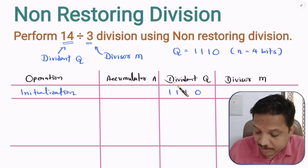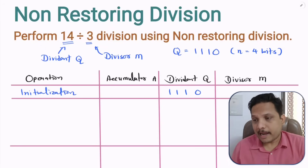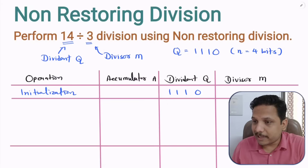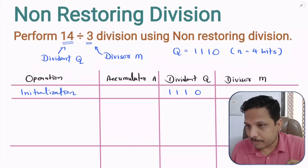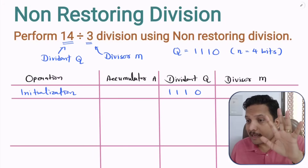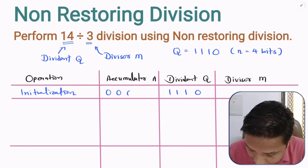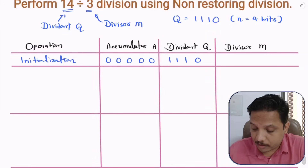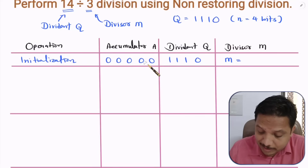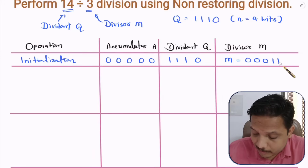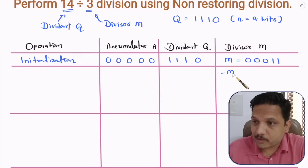When you initialize the data, convert the dividend into binary form first. The accumulator A should be initially zero, represented with n+1 = 5 bits. Since the dividend has 4 bits, the accumulator is represented by 5 bits as 00000. The divisor M = 3 is also represented with 5 bits as 00011.